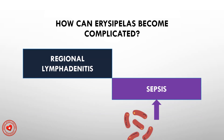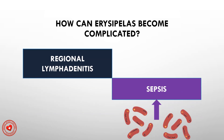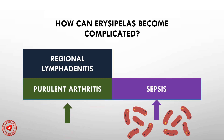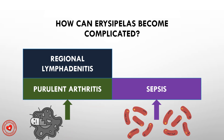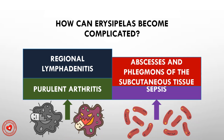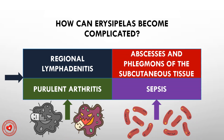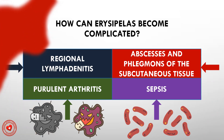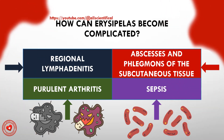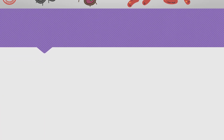How can erysipelas become complicated? All types of erysipelas can be complicated by regional lymphadenitis, abscesses and phlegmons of the subcutaneous tissue, purulent arthritis, and sepsis.